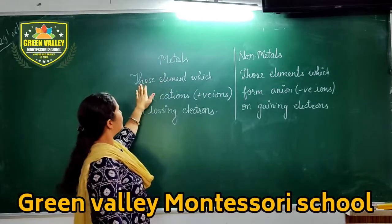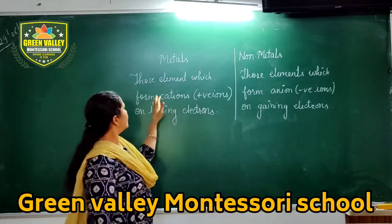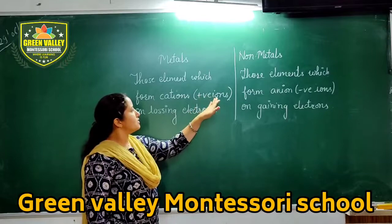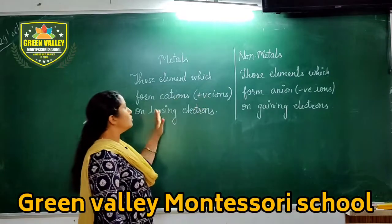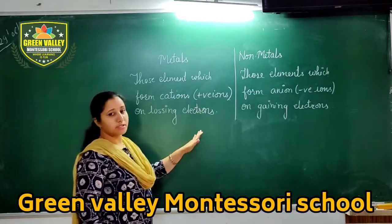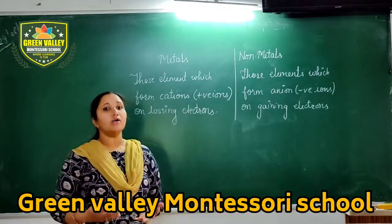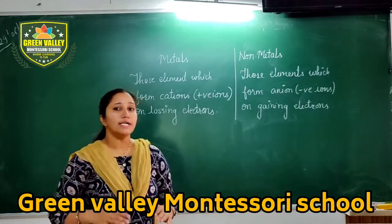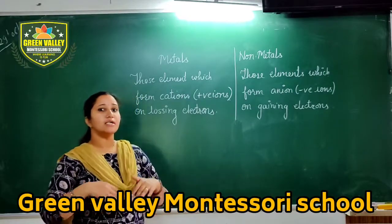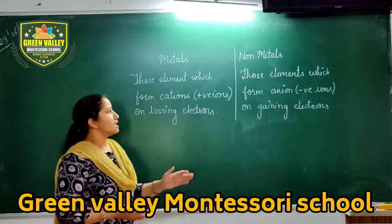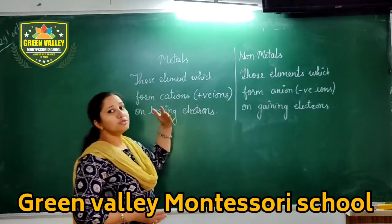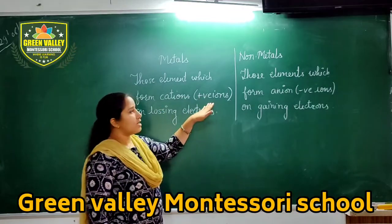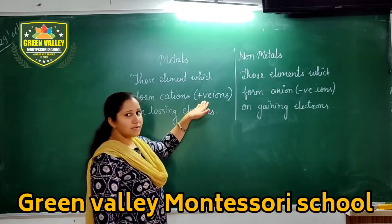So what are metals? Metals are those elements which form cations, that is positive ions, on losing electrons. Metals are those elements that generally lose electrons. After losing electrons, they form positive ions.